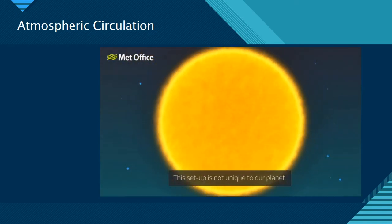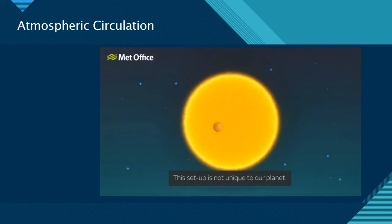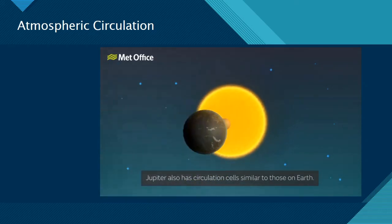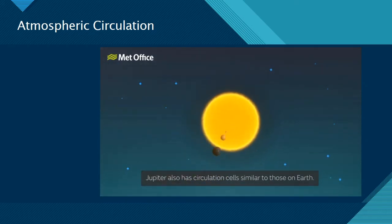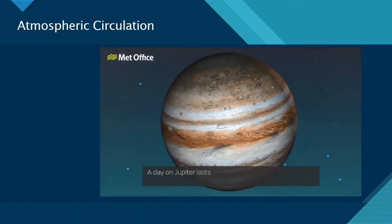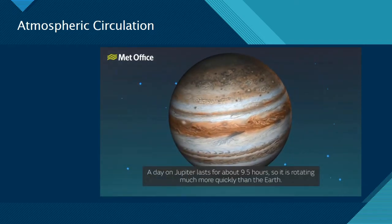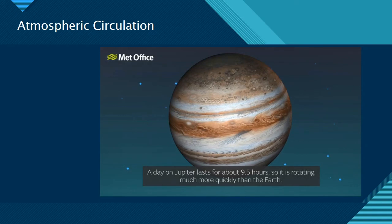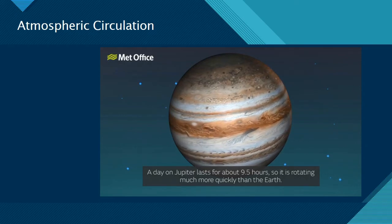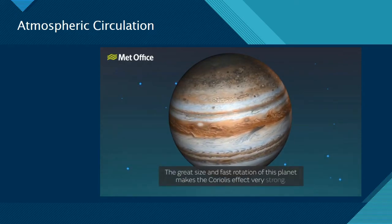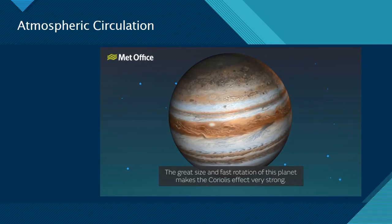This setup is not unique to our planet. Jupiter also has circulation cells similar to those on Earth. A day on Jupiter lasts for about nine and a half hours, so it is rotating much more quickly than the Earth. And thanks to the density and composition of Jupiter's atmosphere, we can very clearly identify the patterns of atmospheric movement resulting from the Coriolis effect.